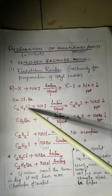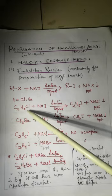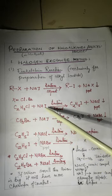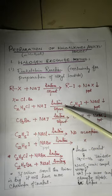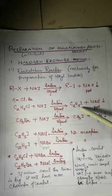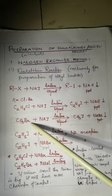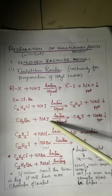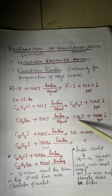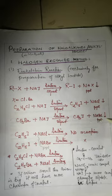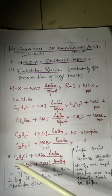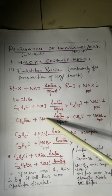For example, ethyl chloride reacts with sodium iodide in the presence of acetone to give ethyl iodide and sodium chloride as a precipitate. Similarly, methyl bromide reacts with sodium iodide in the presence of acetone to give methyl iodide and sodium bromide as a precipitate.